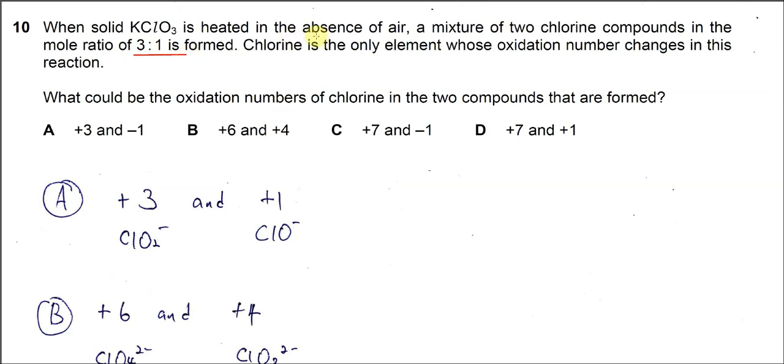The first condition is no O2. So the reactions happen without O2, the KClO3 will decompose and form two compounds only. There must be a 3 to 1 mole ratio, and chlorine is the only element that changes oxidation state or oxidation number.